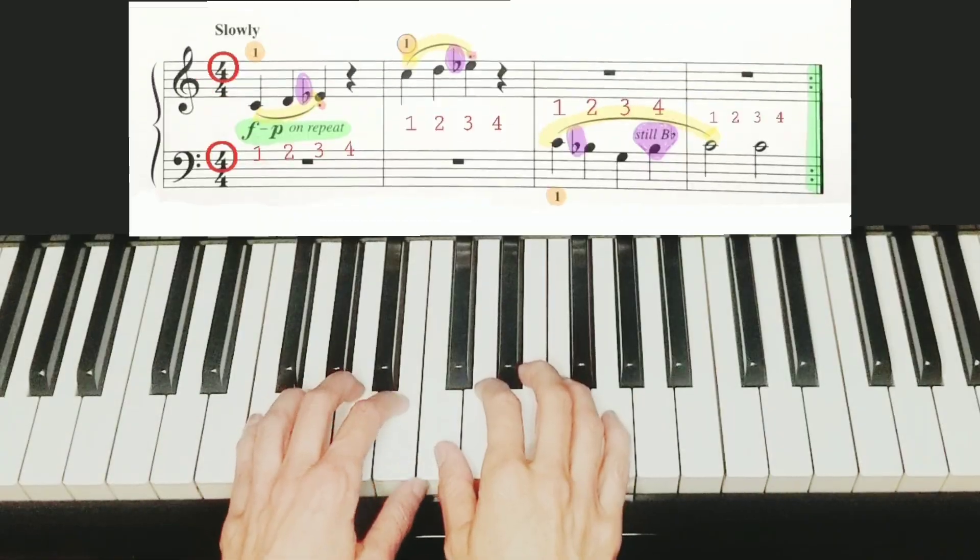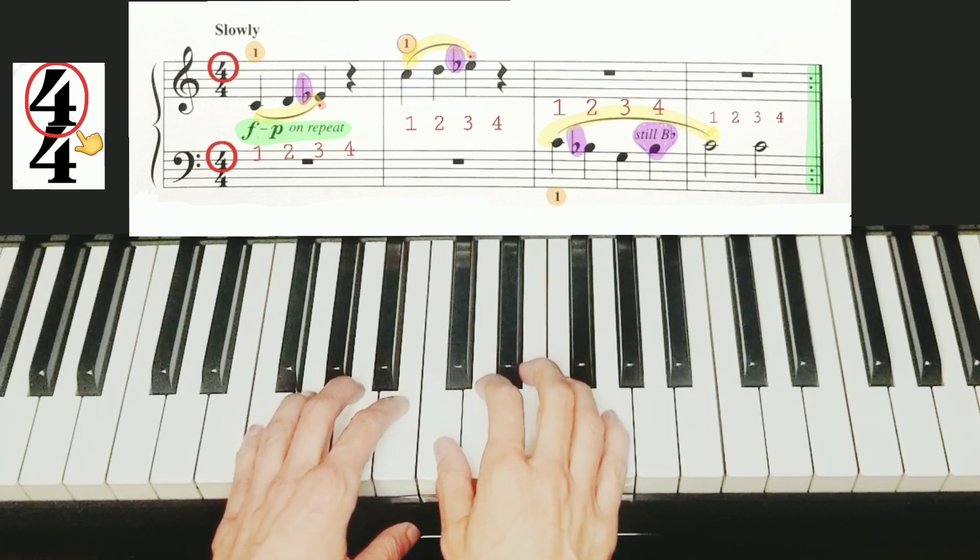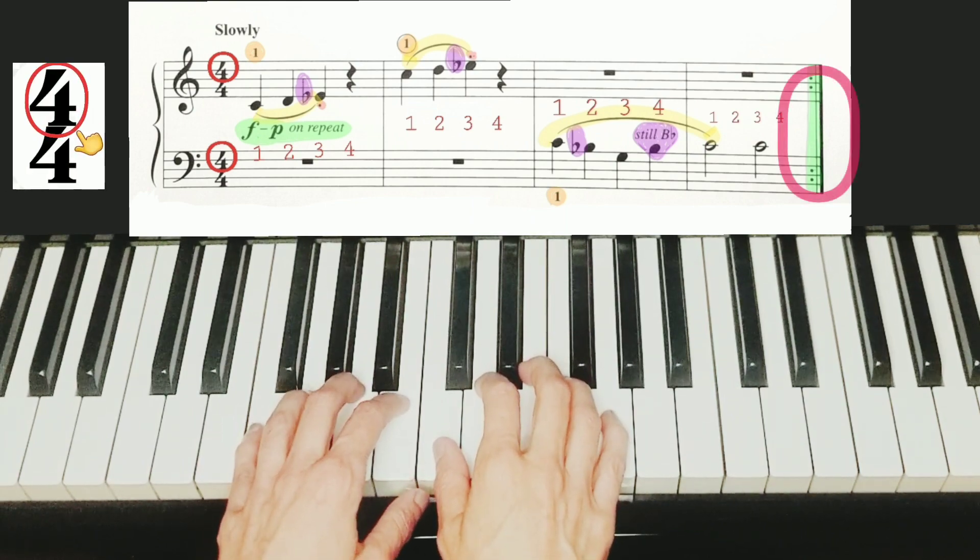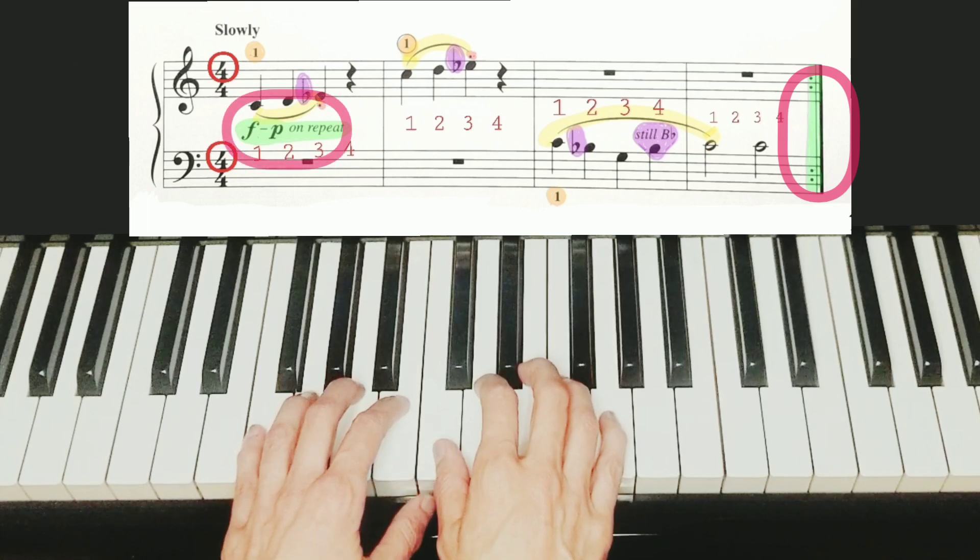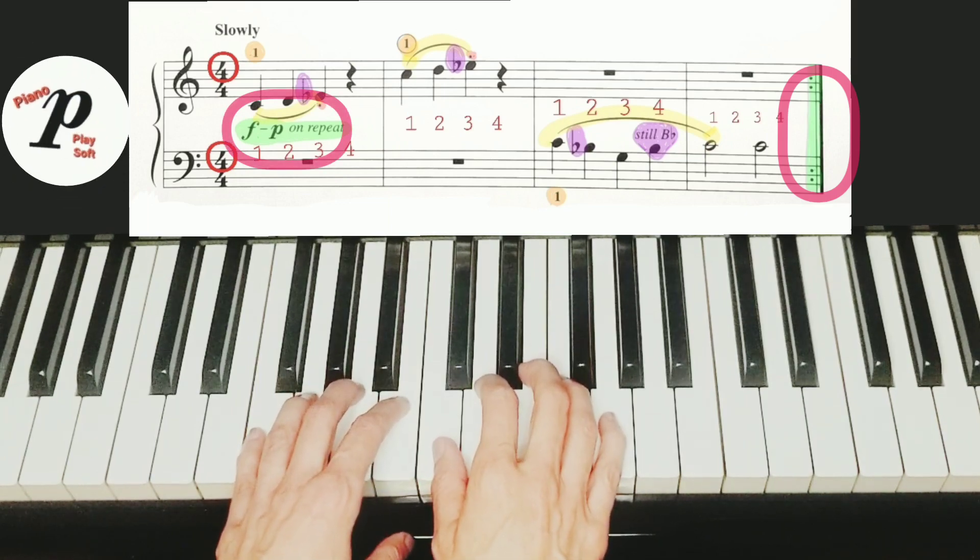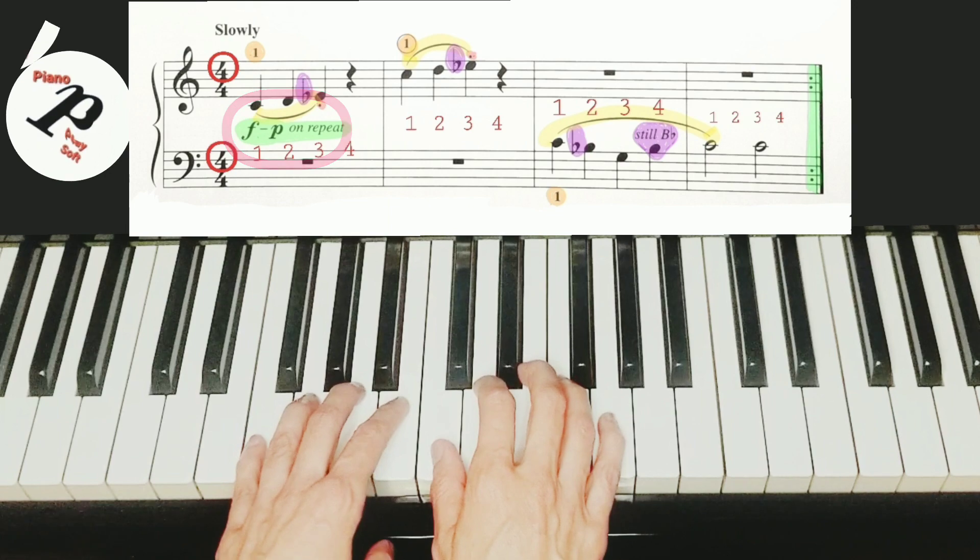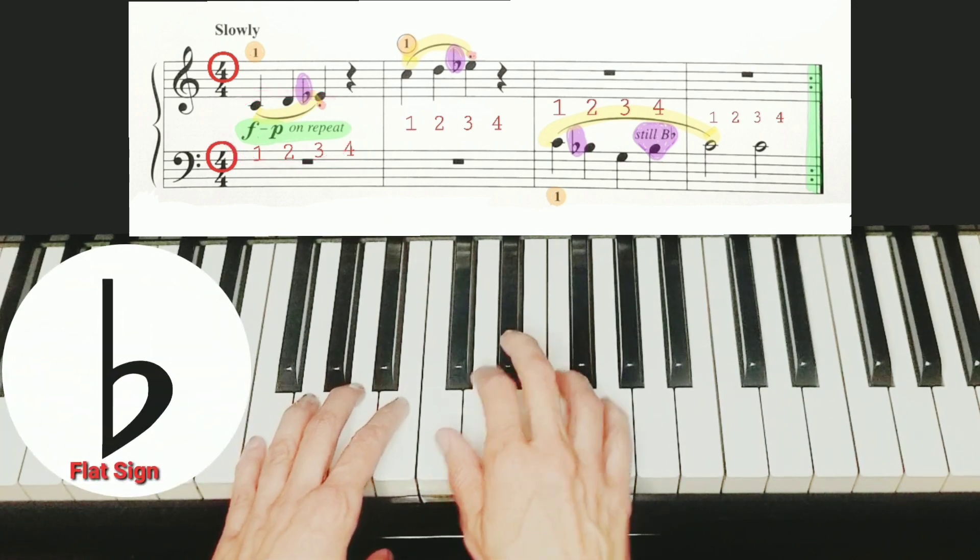In this piece we have four measures and four counts in each measure. We have a repeat sign and the first time we play forte, the second time we play piano. We're going to have flat signs on E.